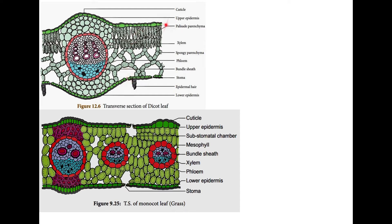That was all about the epidermis. Now, the tissue between the epidermis is known as mesophyll. When we are talking about dicot leaf, it is made up of two types of cells. These cells are called palisade parenchyma, and these cells are called spongy parenchyma.